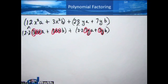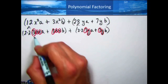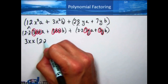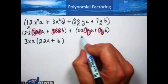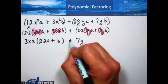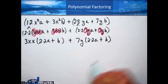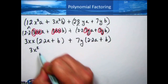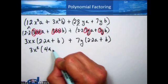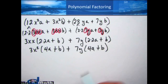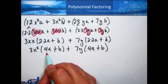Now let's write out the first round of factoring. The first set has 3x² in common, and what's left over is (2 times 2 times a) plus b, which is (4a + b). The second set has 7y in common, and what's left over is also (4a + b). Notice the plus sign is still there. So we have 3x²(4a + b) + 7y(4a + b). Those remainders match — that's how we know factoring by grouping is working.